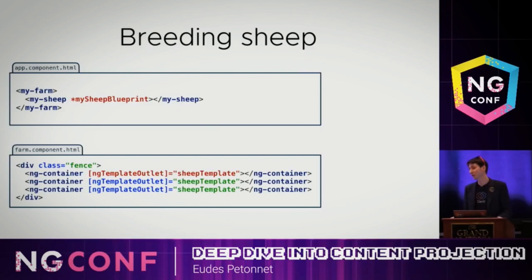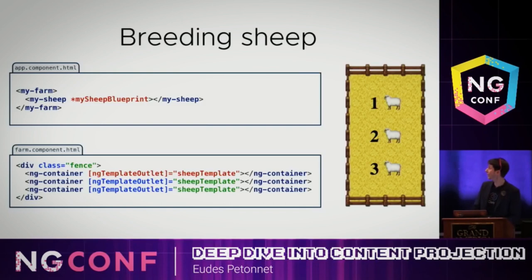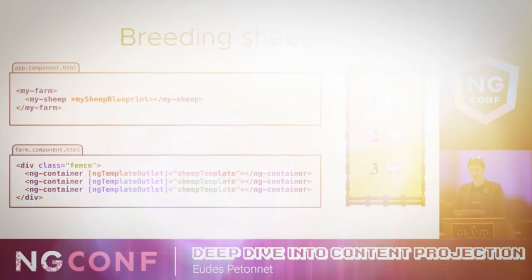Now, in the farm template, instead of having three ng-contents, we use three ng-template outlets, which is just the directive Angular provides to easily stamp out a template ref. There are other APIs using TypeScript services from Angular, but that's the most straightforward way. And when we do that, we get our sheep — one, two, three. We only pass one in as part of the app, and we get three displayed at the end.